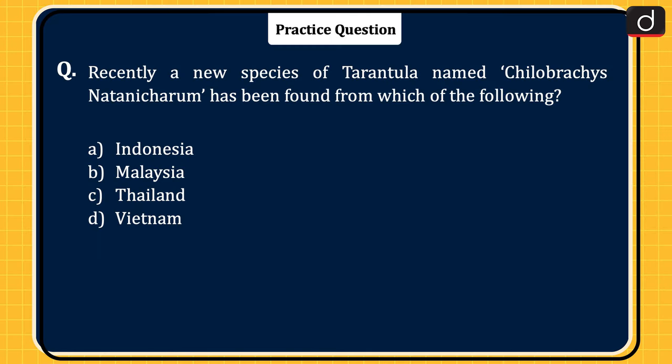Now it is time for the practice question. Recently, a new species of Tarantula named Chilobrachys has been found from which of the following? Indonesia, Malaysia, Thailand, or Vietnam? Send the answer of this question in the comment section. Stay tuned for the next episode. Thanks for watching.